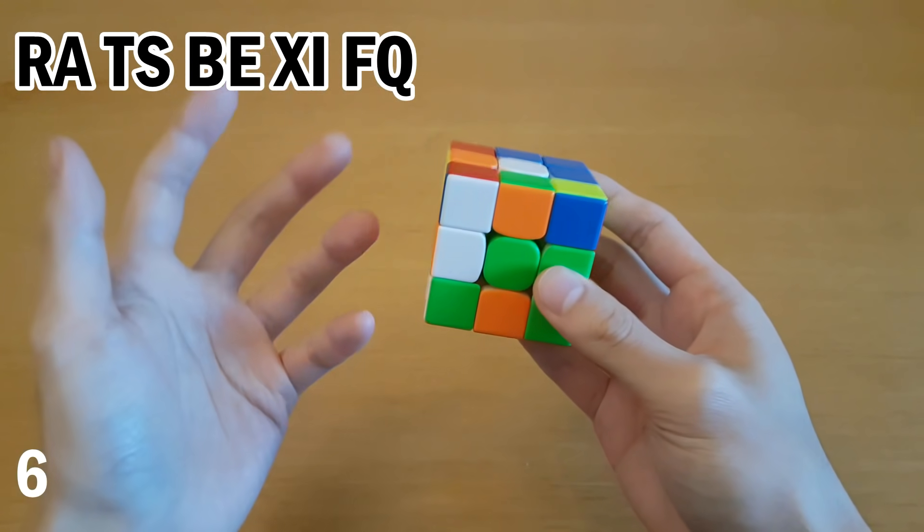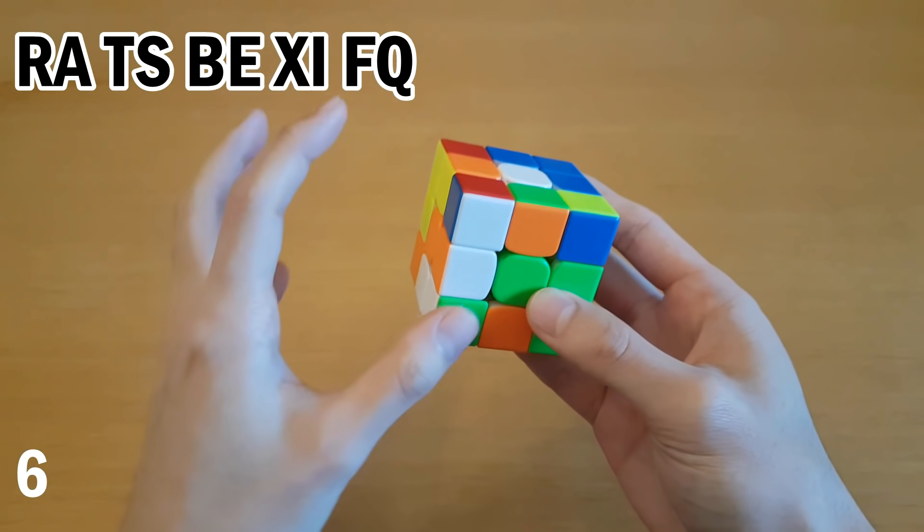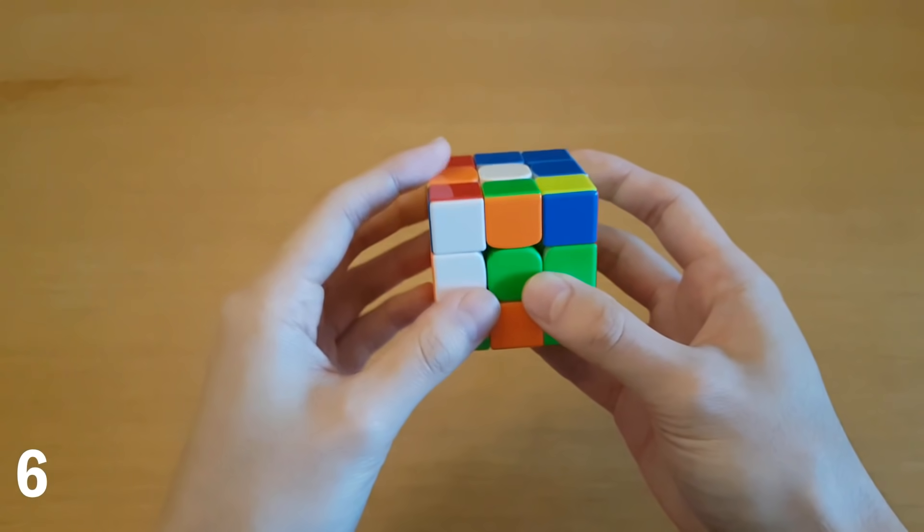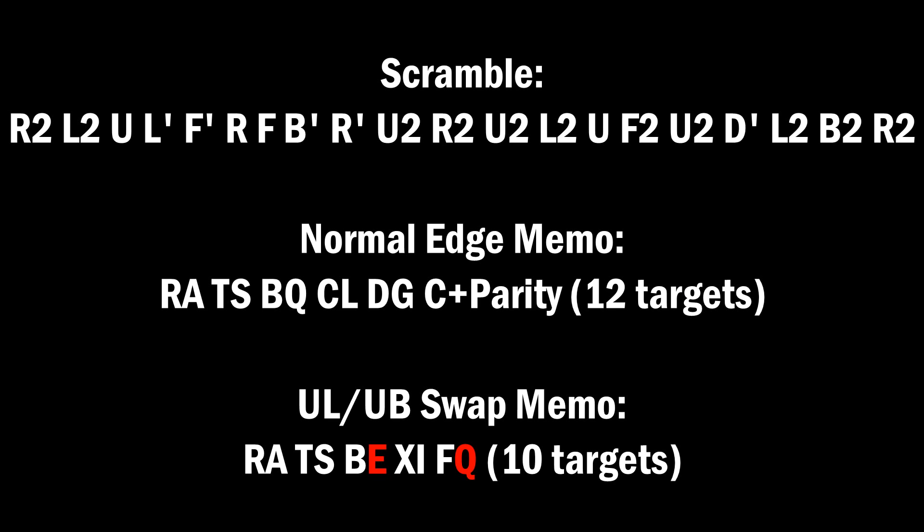So with edge memorization, you will always get an even number of letters. You just change what you do if you have parity. This seems like it'll be hard at first, but it gets really easy once you get used to it. And I believe in solves with parity, this will always either save you two algorithms or a zero algorithm. So it's either equal or better compared to doing a parity algorithm.